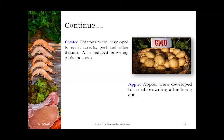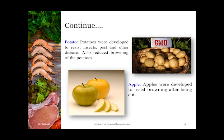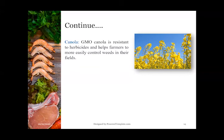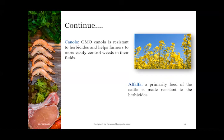Apple: apples were developed to be resistant to browning after being cut, hence improving the product. Canola: GMO canola is resistant to herbicide and helps farmers to more easily control weeds in their fields, hence increasing the production of canola. Alfalfa: primarily a feed for cattle, alfalfa is made resistant to herbicides.